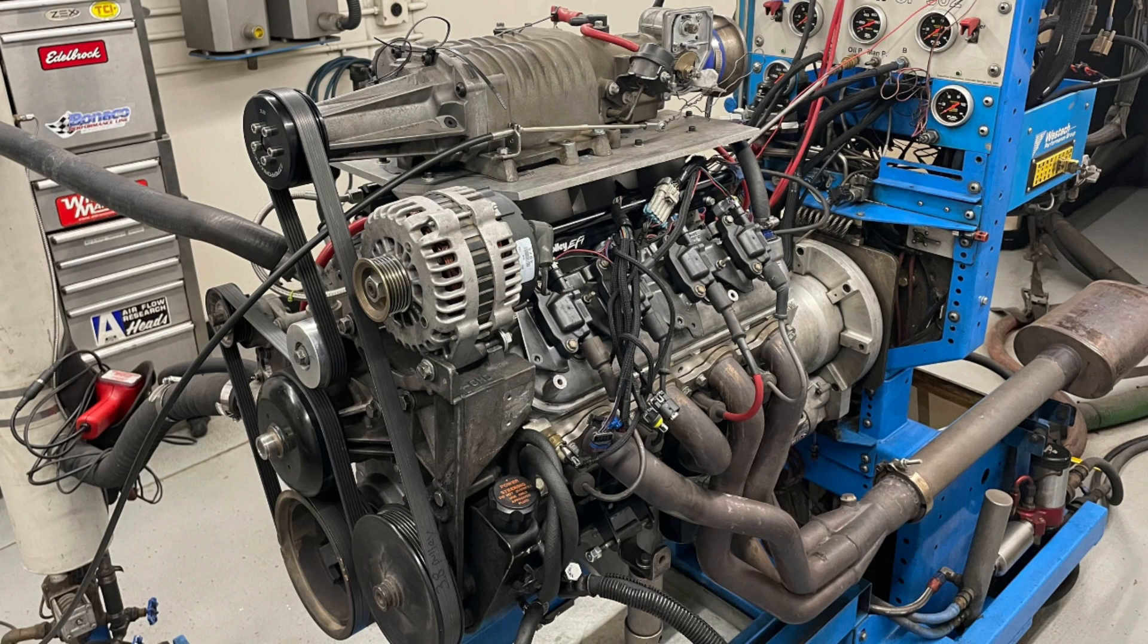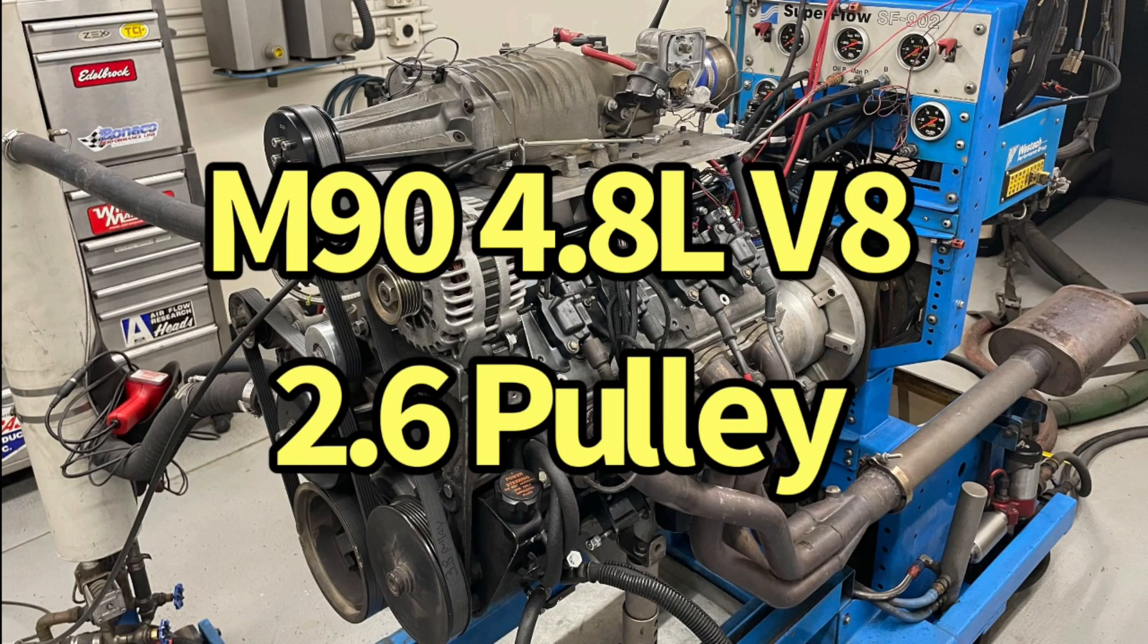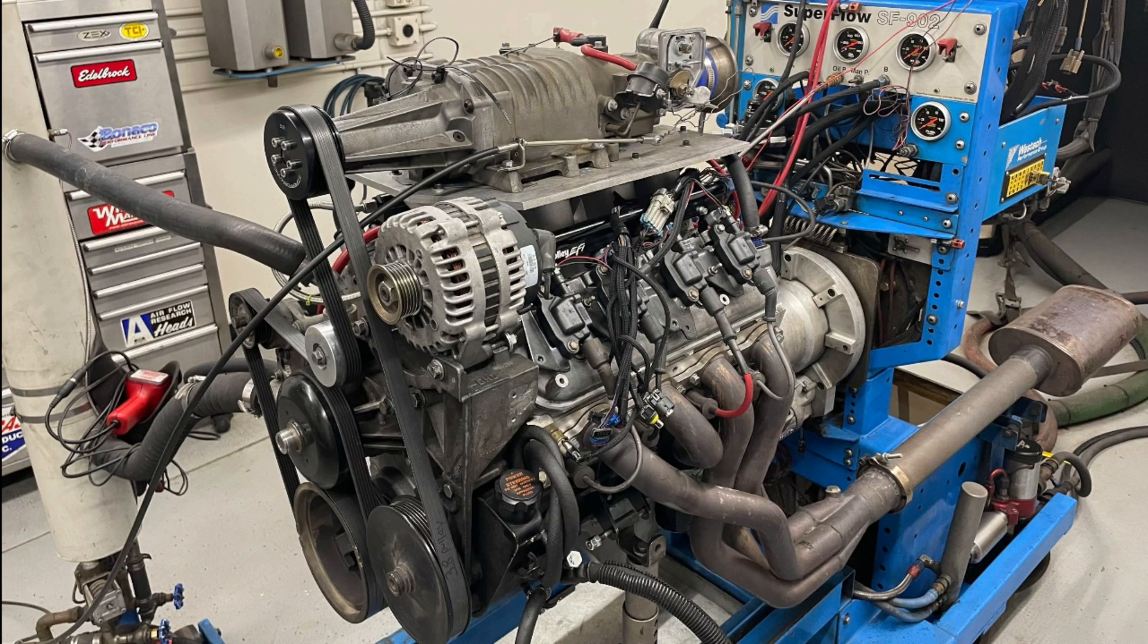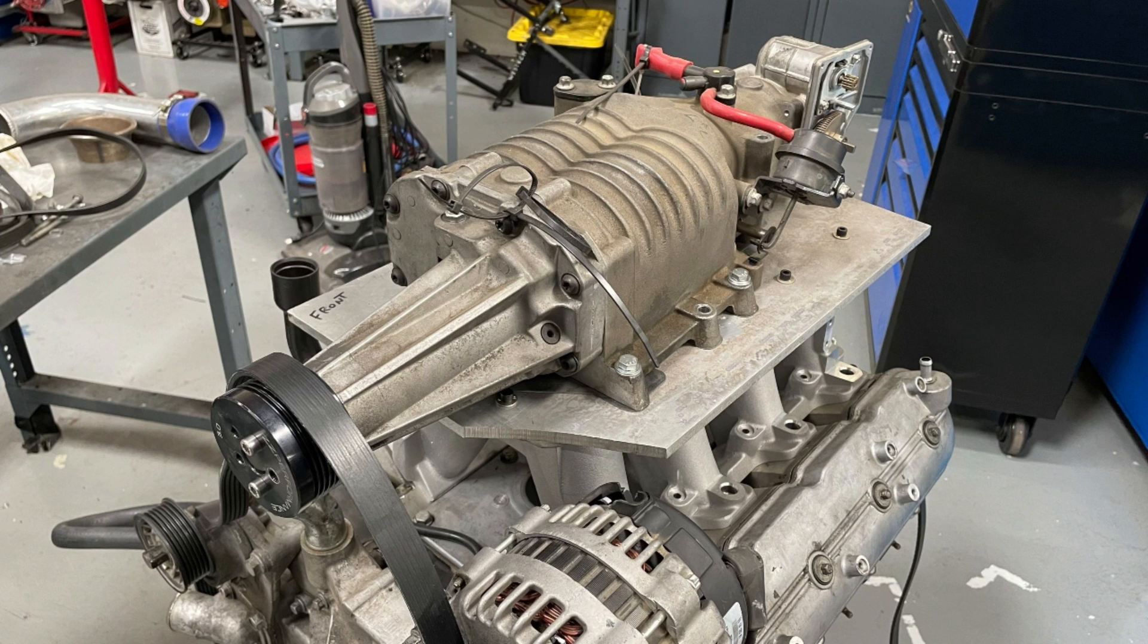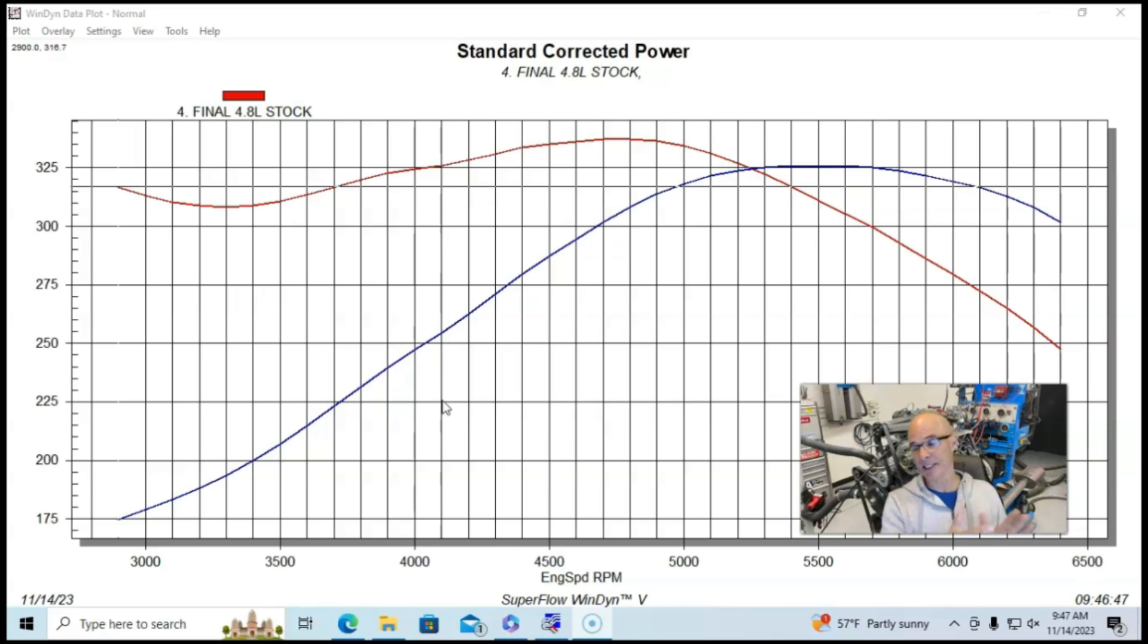Okay, now let's take a look and see what happened when we added the M90 with the 2.6 inch blower pulley to the 4.8 liter, and then we can kind of compare the power outputs between the 3800 V6 and the 4.8 liter V8, both run with the same blower.